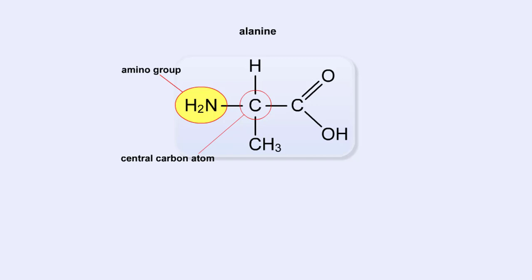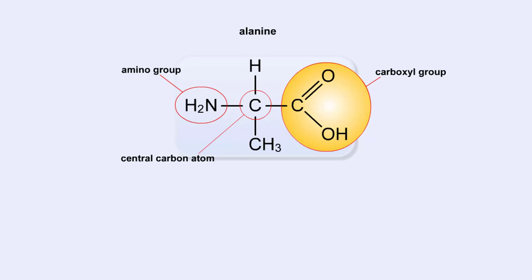Now let's look at the carboxyl group, which is the acid part of the amino acid. A carboxyl group contains carbon, oxygen, and hydrogen. This is the carboxyl group of the amino acid. Notice that it has a carbon bound to two oxygen atoms — this is where the group gets its name, carb-oxyl. The hydrogen attached to one of the oxygen atoms is what gives the amino acid its acid properties.